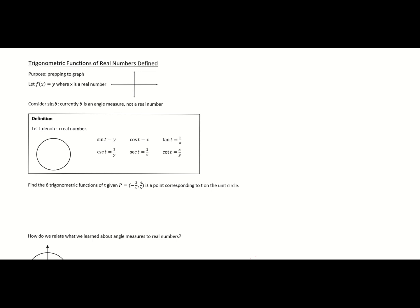When we have the rectangular coordinate system, the horizontal line is the x-axis and the vertical line is the y-axis. You input x and output y, and x is a real number. Consider sine of theta — the theta is an angle measure, not a real number. So we need to define a trig function when a real number is plugged in.